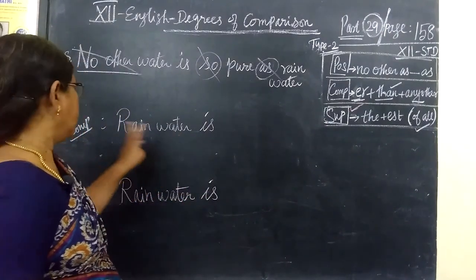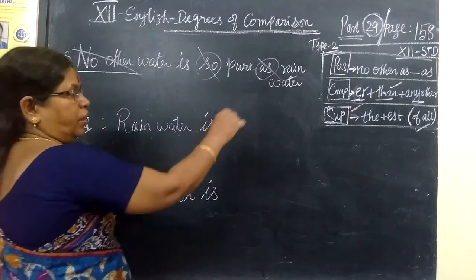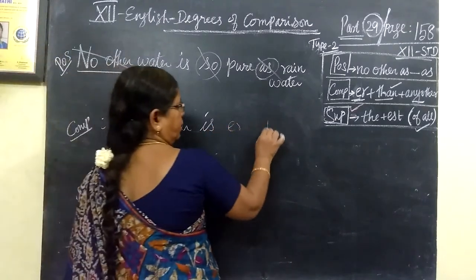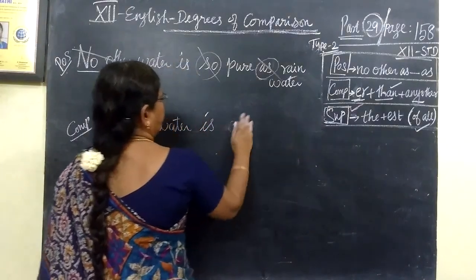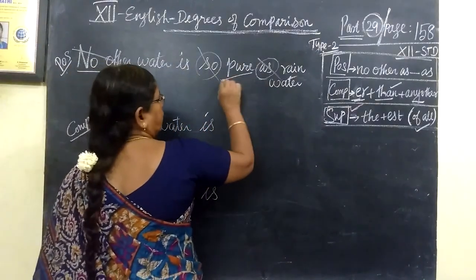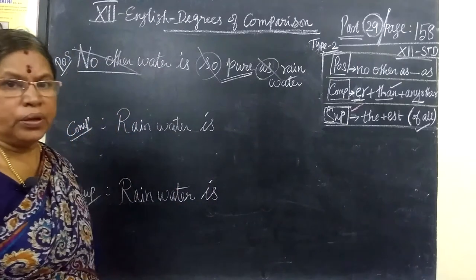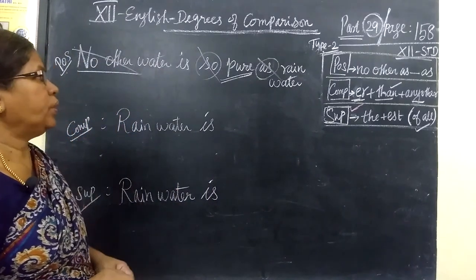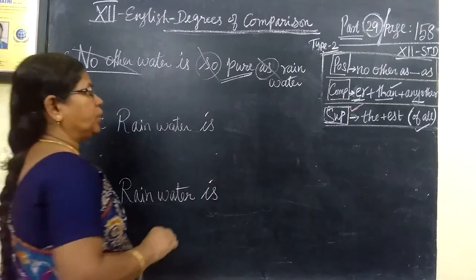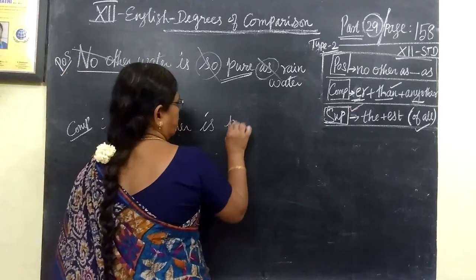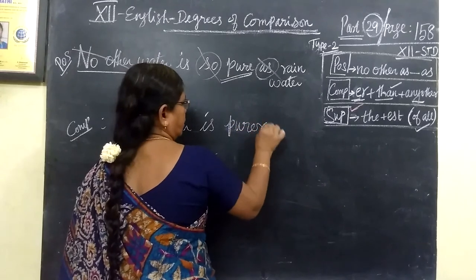E-R than any other structure. E-R than any other. Where do we put E-R? In this way, put it. So purer, purest, or more pure, or most pure. Purer, purest is. Purer than. E-R, put it on. Than, put it on.